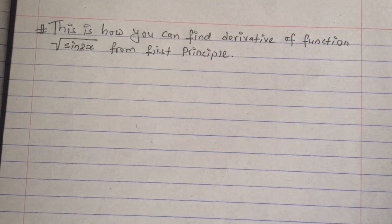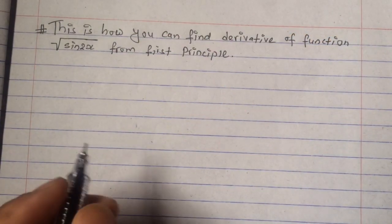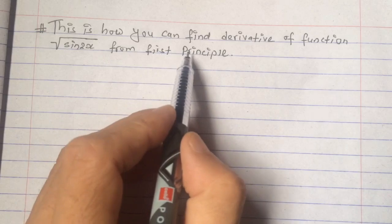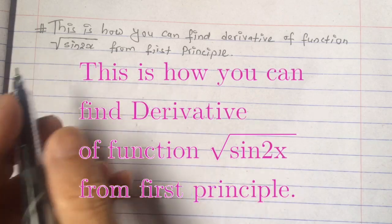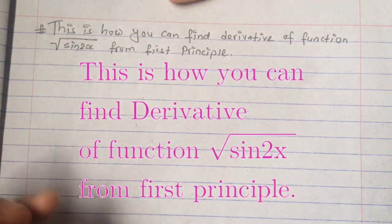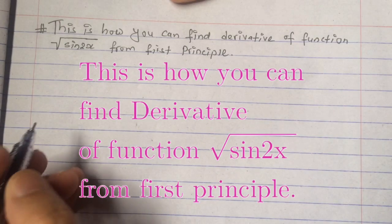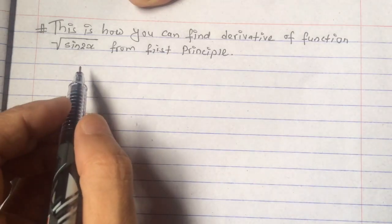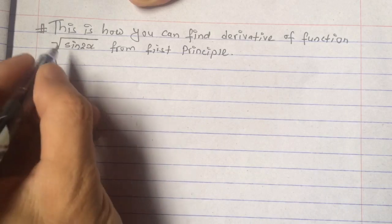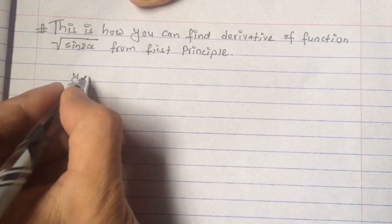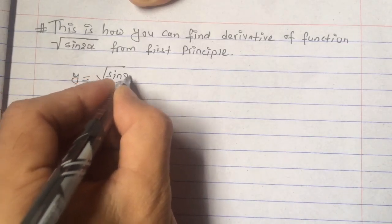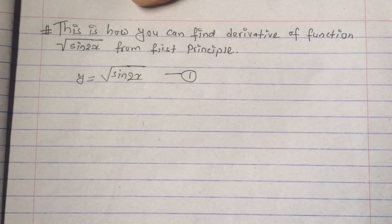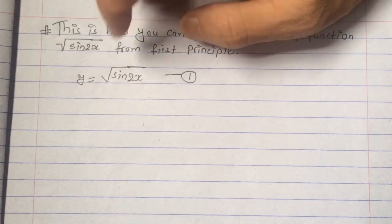This is Comprehensive Math Science YouTube channel. Welcome to this channel. In this video, you will be learning about finding the derivative of the function √(sin 2x) from first principle, or from the definition of derivative. Stay tuned with us till the end of this video — you will learn something new, different, and very interesting. So let's begin. First of all, we have to consider a function. Let this function be y = √(sin 2x). Let this be equation 1.